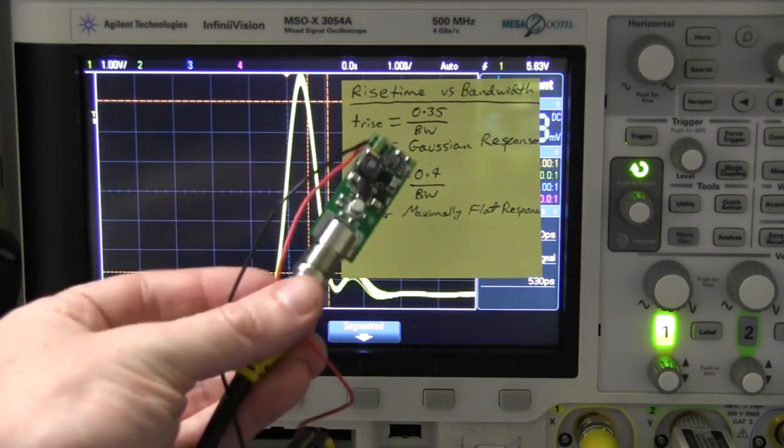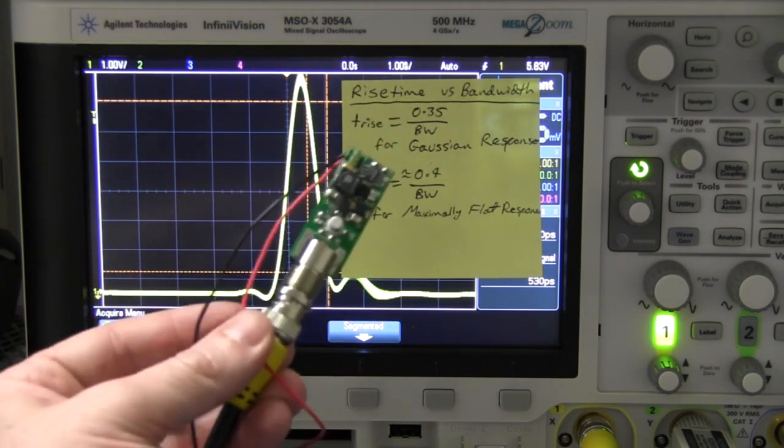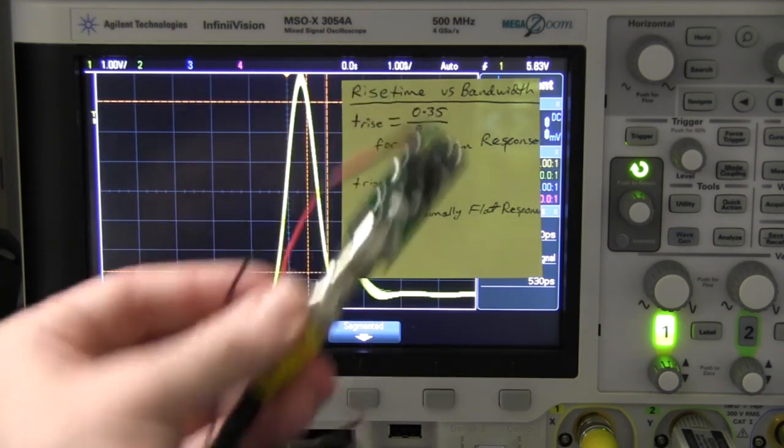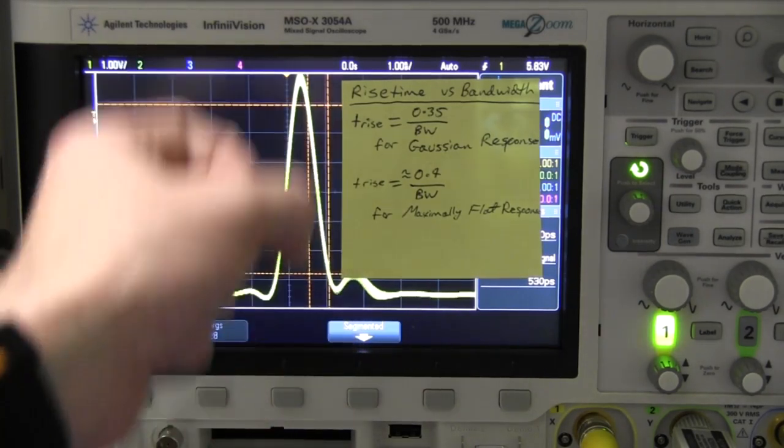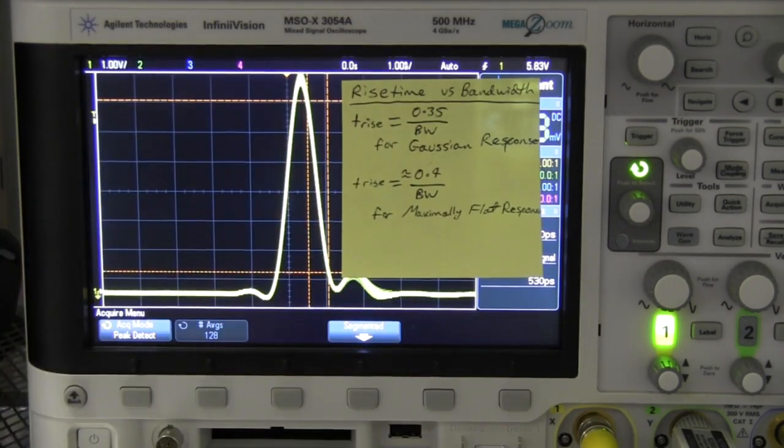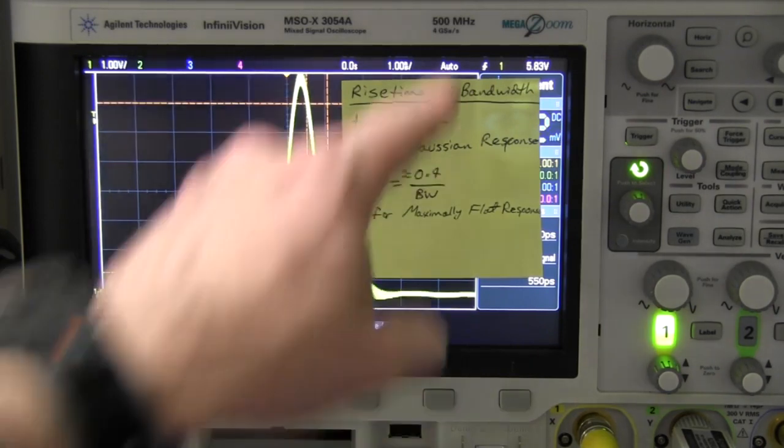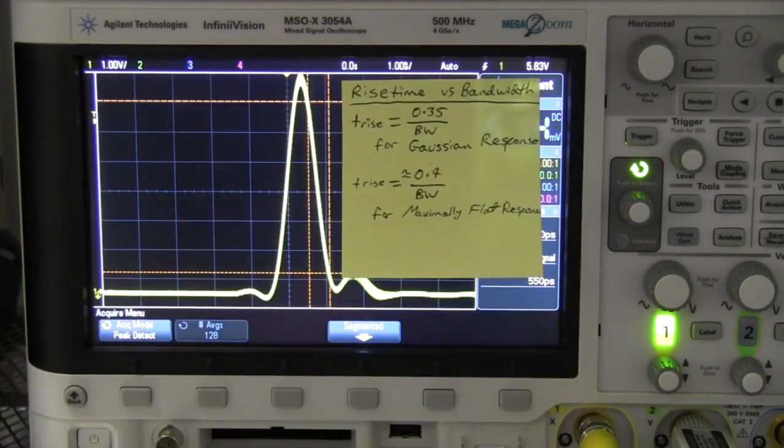I'm going to have to try and get access to a better scope to actually measure this circuit here. But anyway, we can figure out from this what actual bandwidth we're getting on this scope. And I bet you it's better than 500 megahertz.